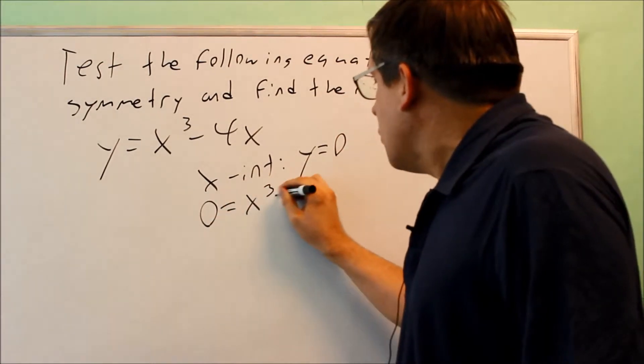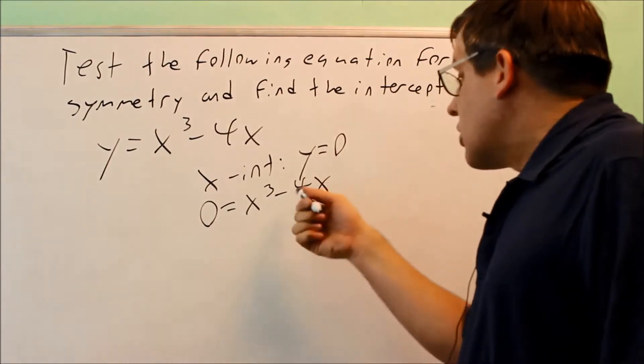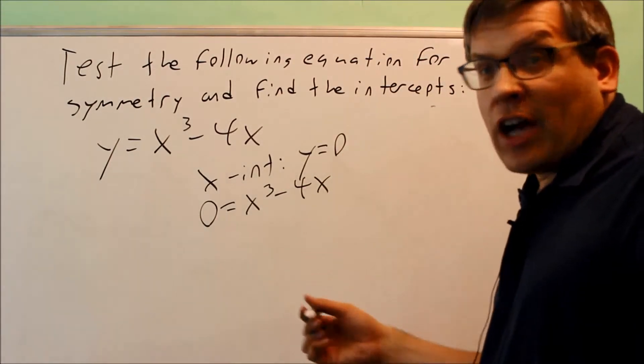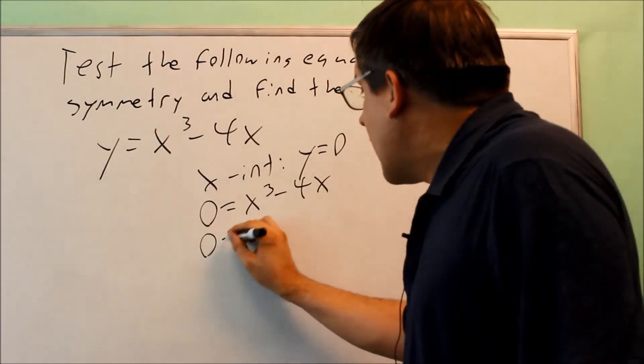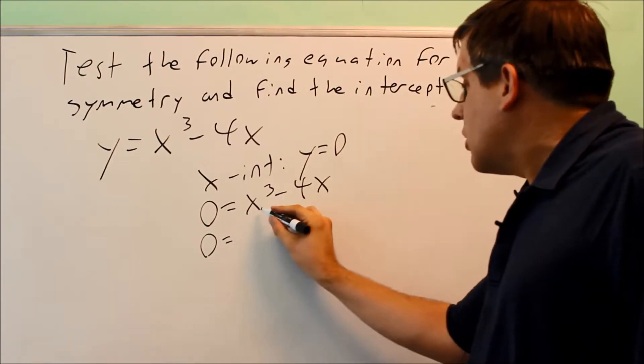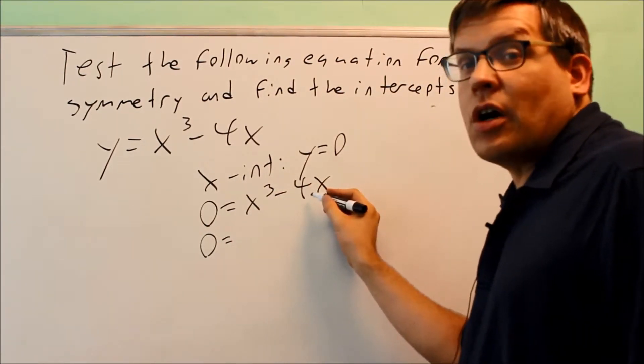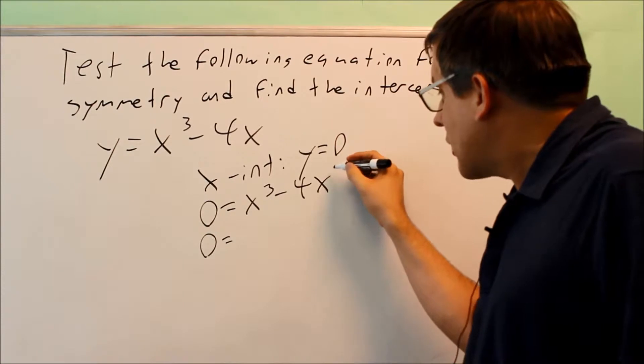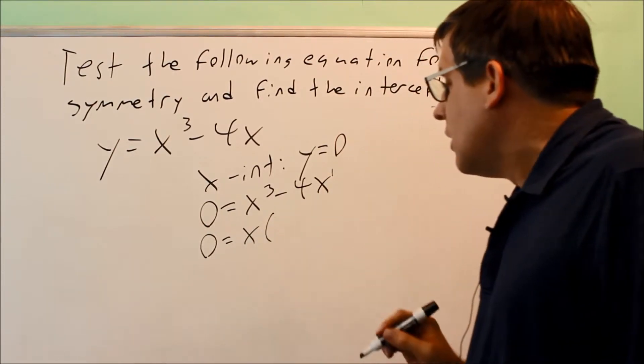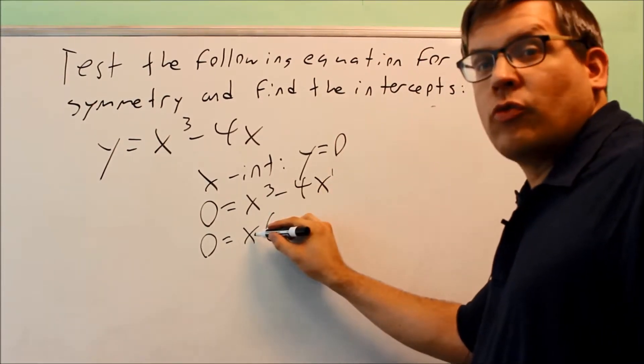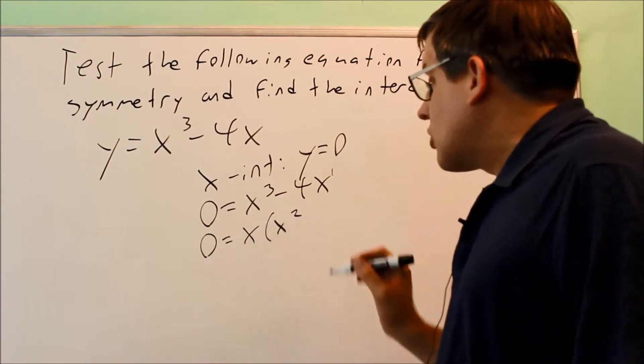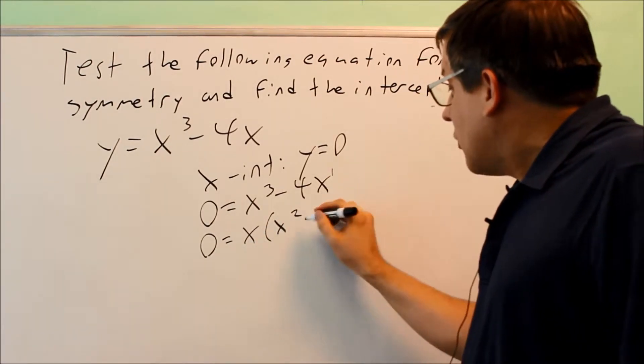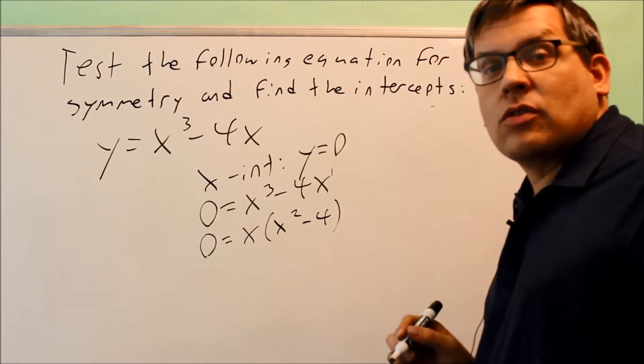0 equals x cubed minus 4x. To solve this, we have to do a factoring step. We're going to factor out, in this case, the most we can pull out is going to be a single value of x. The x to the first power here, that's the most we can pull out. We have three of them. We're going to remove one of the x's. We get x squared. Take out the x from this one, and we get minus 4.